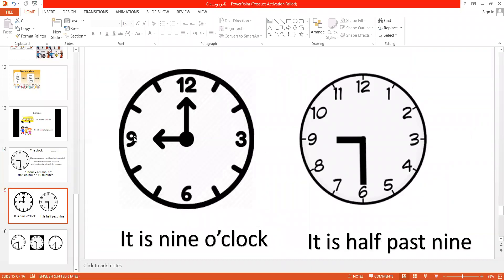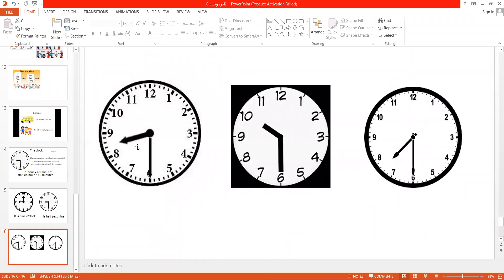Let's take a look. Here, the short handle is at the nine and the long handle is at the 12, so we say it is nine o'clock. The short is at the nine, the long is at the six, we say it is half past nine. Here, short is at the eight and the long is at the six - it is half past eight. The short is at the ten and the long is at the six - it is half past ten. Here it is half past seven.